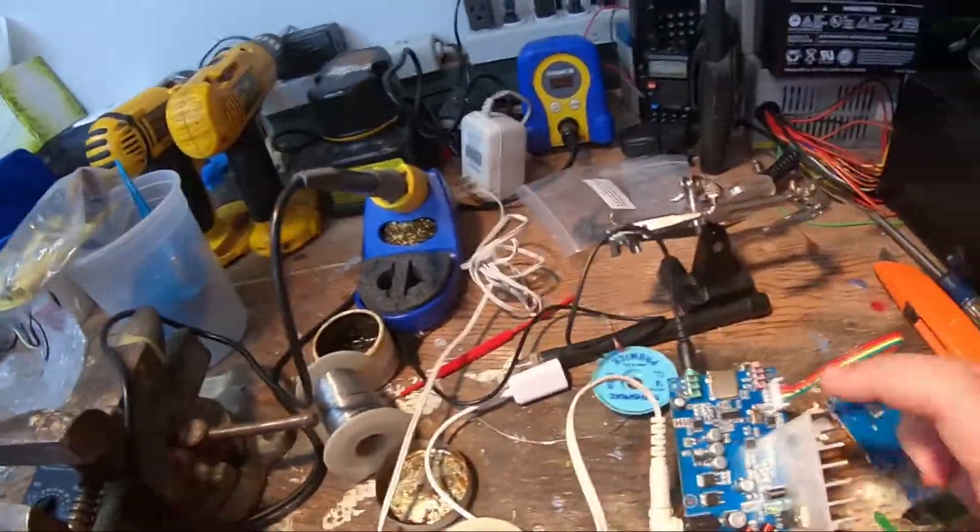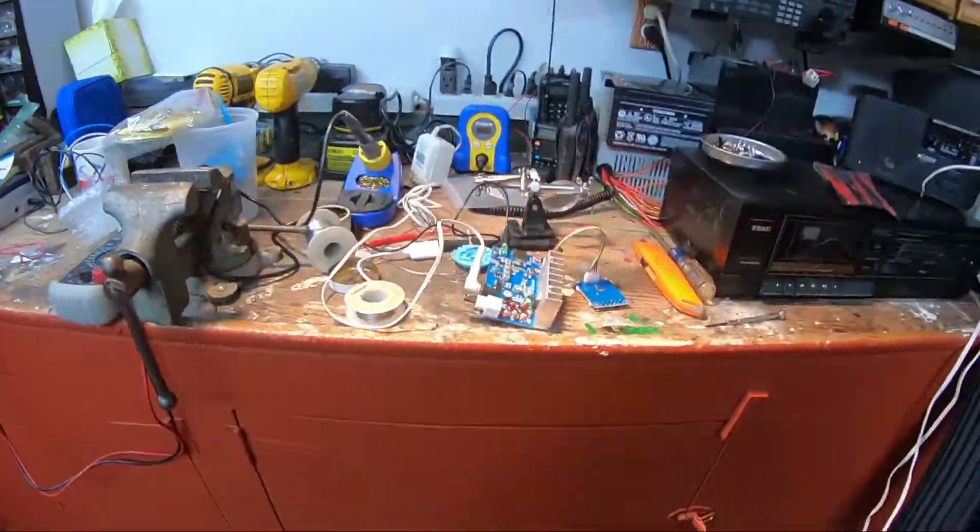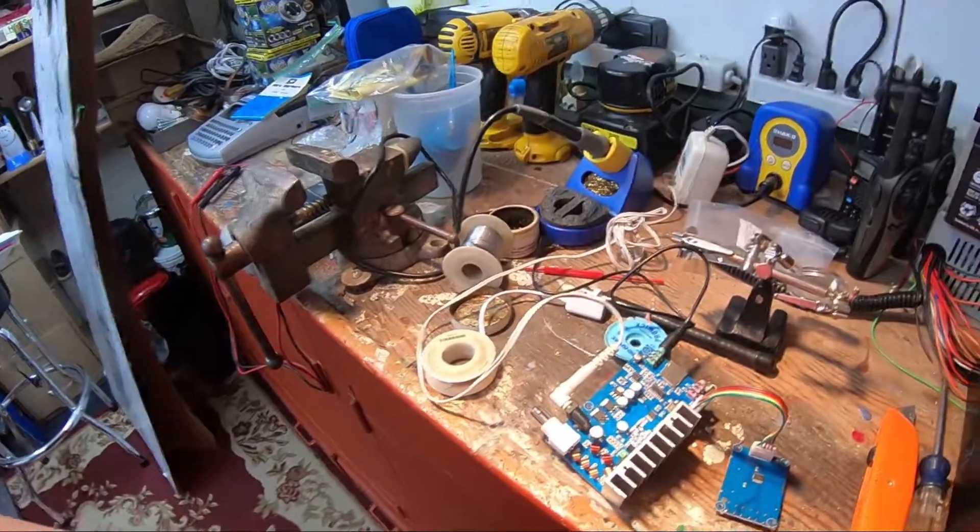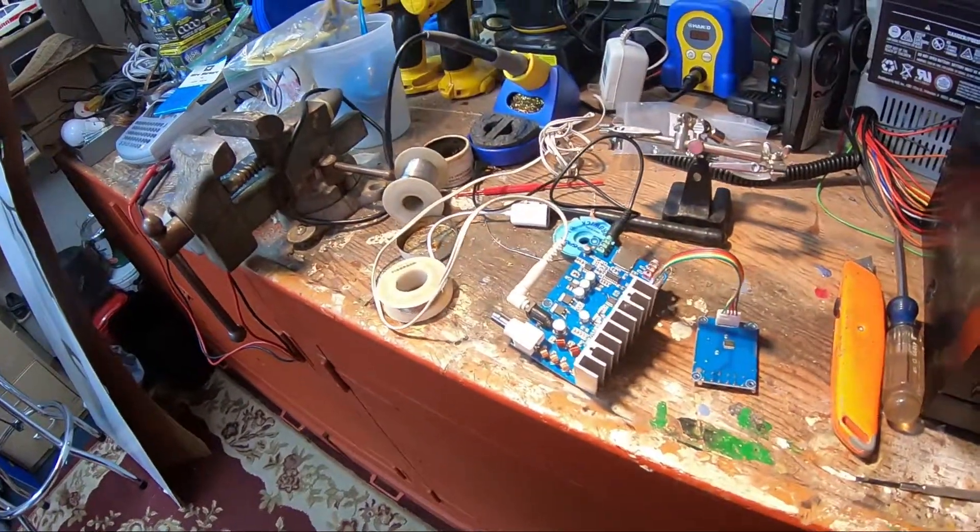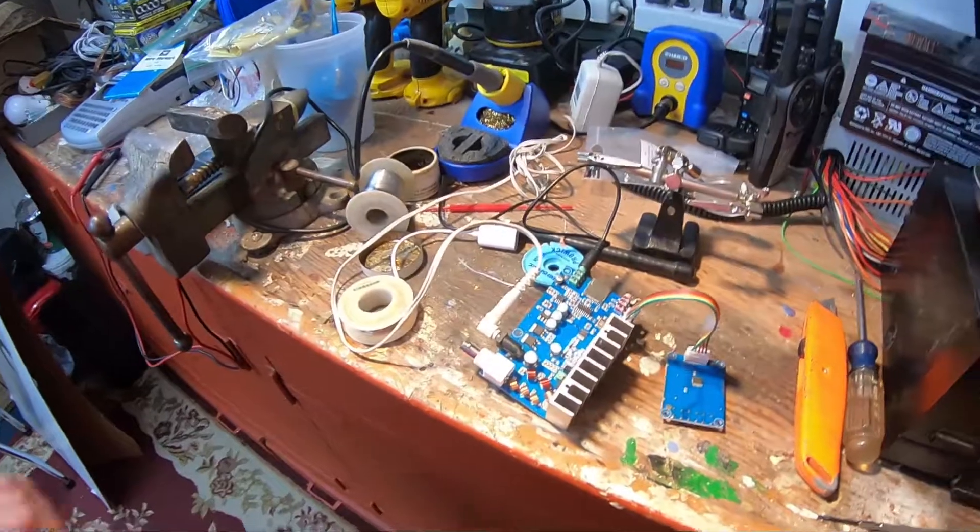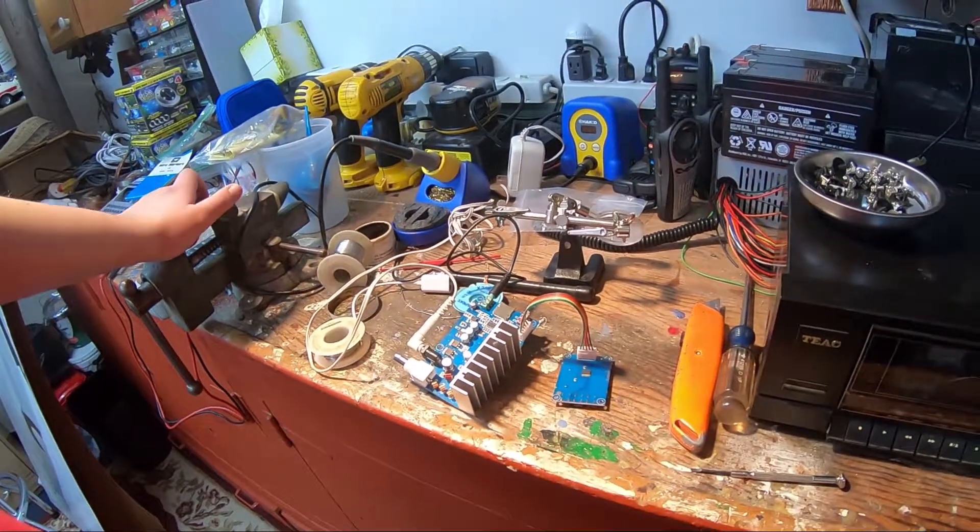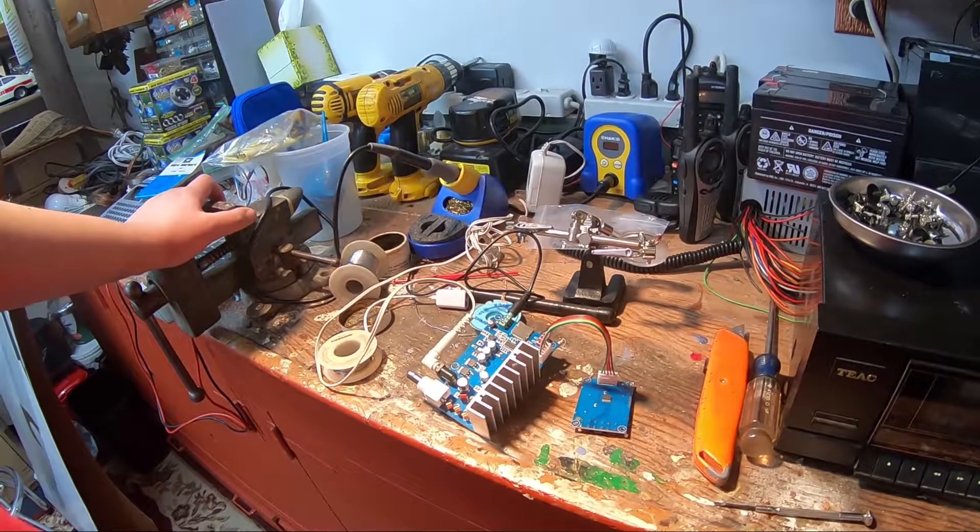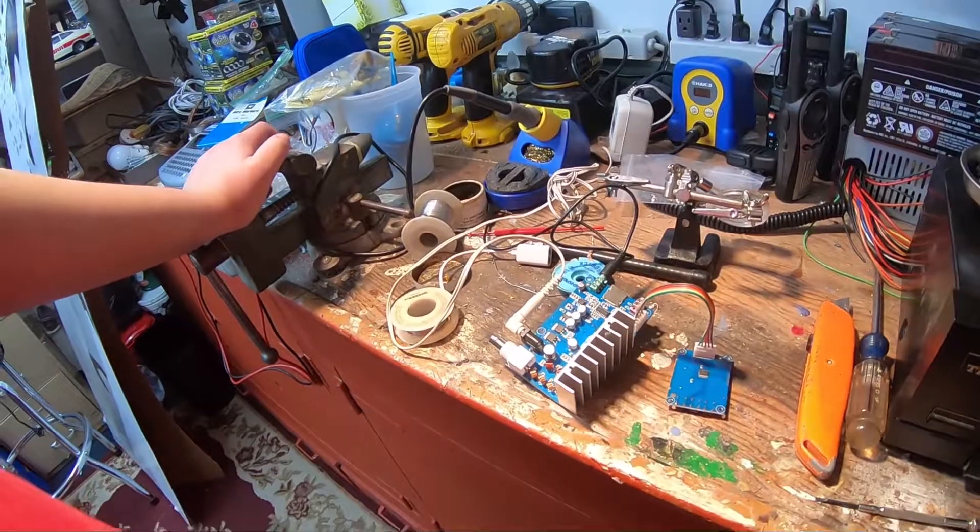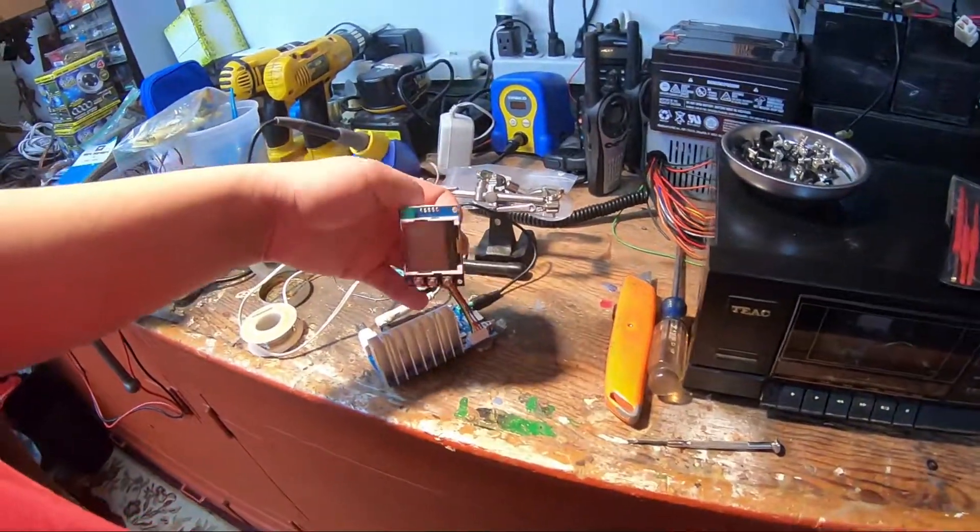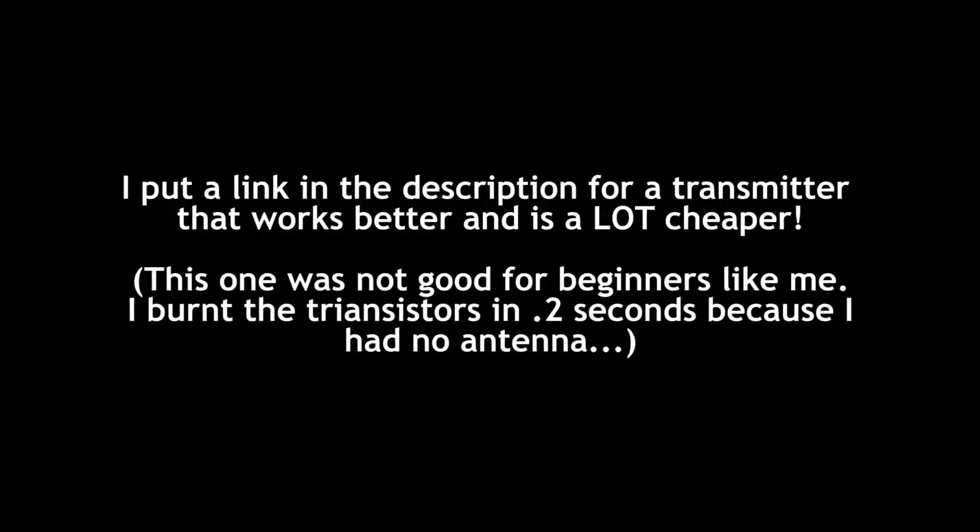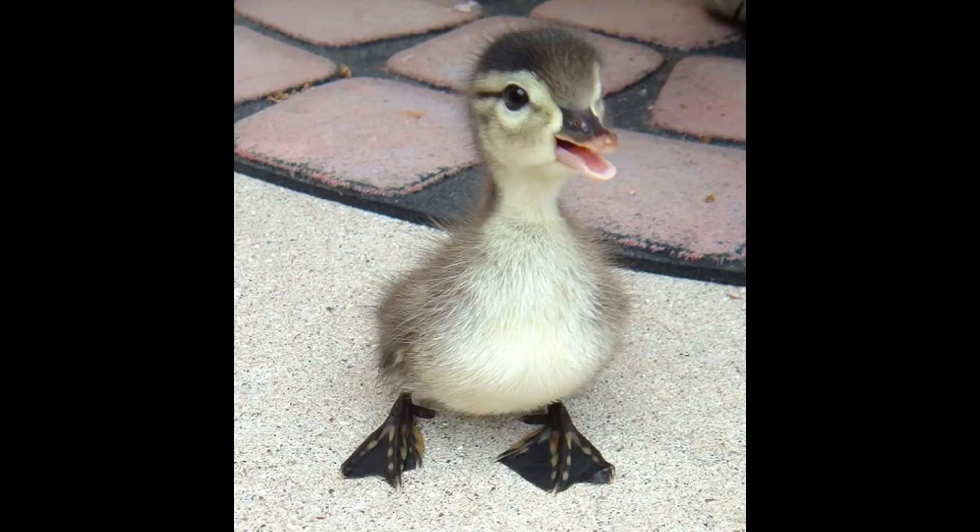I think there's better transmitters out there that you can buy instead of this one. This one was like $25. I think you can buy a better one - I would just buy a pre-made one, like a whole house FM transmitter. Yeah, I think it's a whole house - those are pretty good for Christmas light shows. But yeah, there's other ones on eBay. Well, goodbye guys, thank you for watching this very bad review.